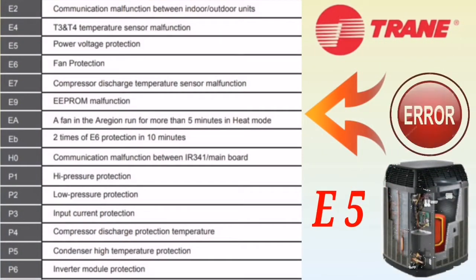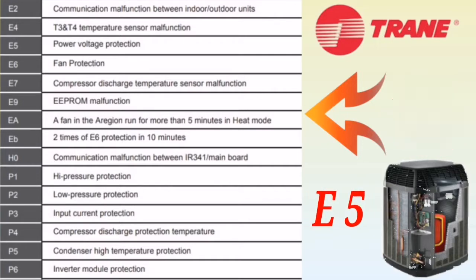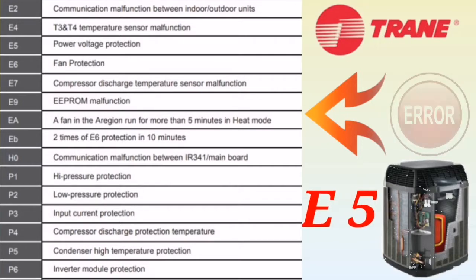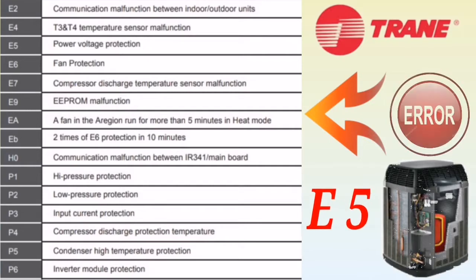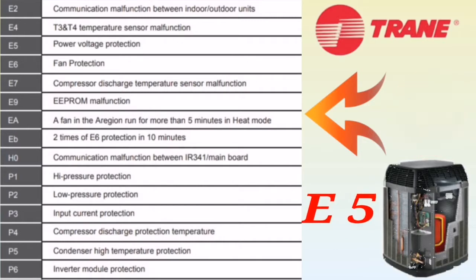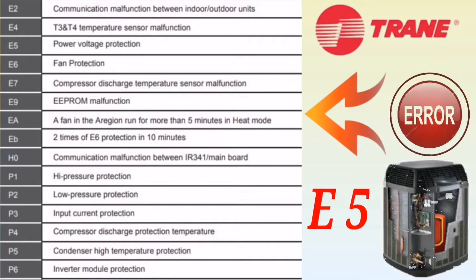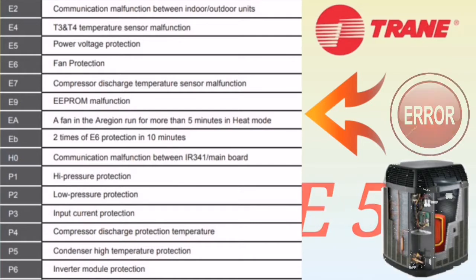The next error code is E5, which means power voltage protection. This occurs due to fluctuation of the power supply. If the power supply to the indoor and outdoor unit is not coming properly at 220 to 230 volts, it will show this error. You have to check and stabilize the power supply to resolve error E5.